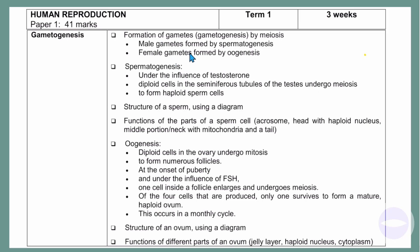This document on your screen is an examination guideline from the Department of Basic Education. Today we will be looking at human reproduction, focusing on gametogenesis. The definition of gametogenesis is the formation of gametes by meiosis. Gametogenesis is divided into two parts: spermatogenesis, which is the formation of male gametes, and oogenesis, which is the formation of female gametes. Male gametes are sperm cells, and female gametes are egg cells or ovum.